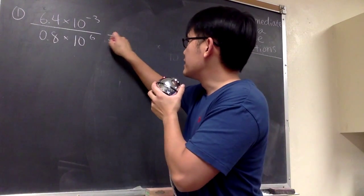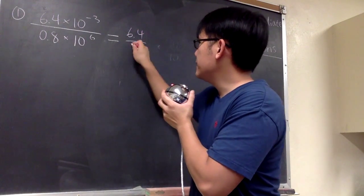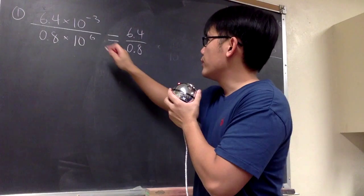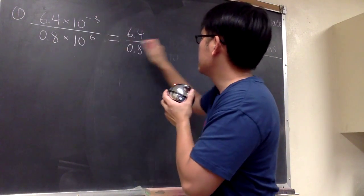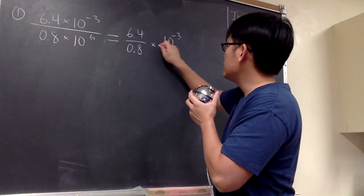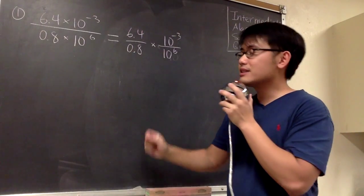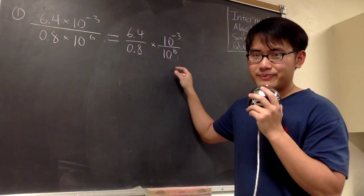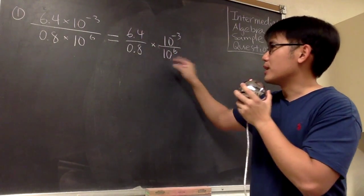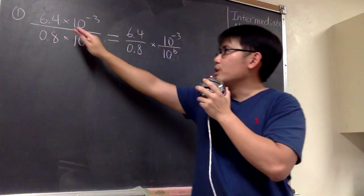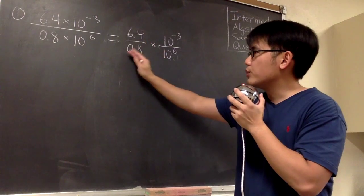Let me show you. This is the same as: I can first focus on the 6.4 over 0.8, and then put down just one multiplication, and then the second fraction — 10 to the negative 3 over 10 to the positive 6 power. We get to do this because to multiply two fractions, we just multiply the tops together over the bottoms multiplied together. So when we have multiplications on the top and on the bottom, we get to break them down into multiplication of two fractions.